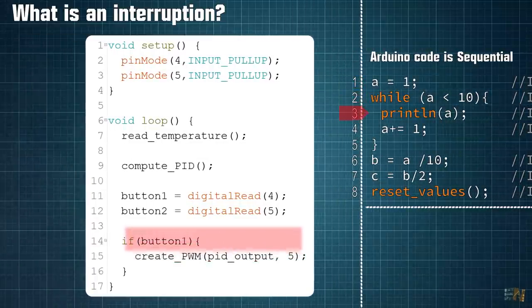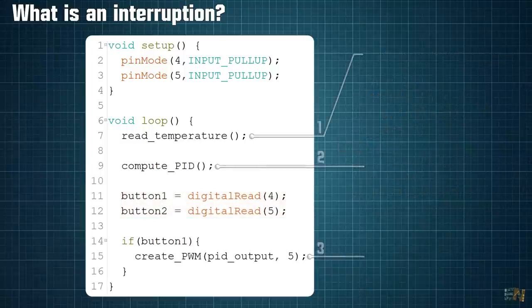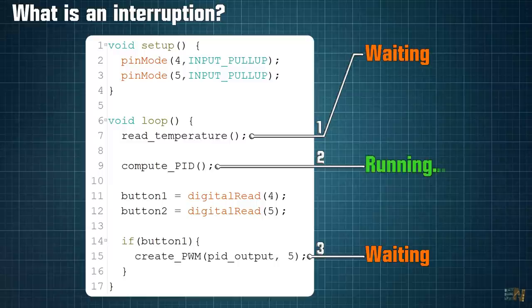Between these functions, we read the state of two pins connected to some push buttons. Since the Arduino code is sequential, it's quite obvious that function 2 won't run till function 1 is not over and function 3 won't run till function 1 and 2 are over.